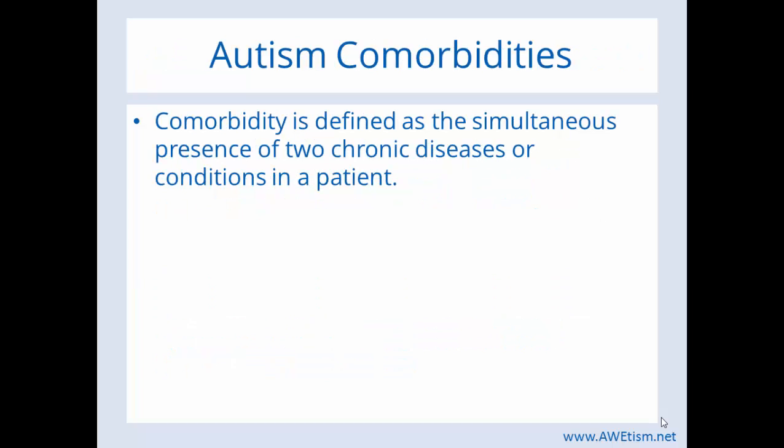Comorbidity — what is it? Comorbidity is defined as the simultaneous presence of two chronic diseases or conditions in a patient. It's really important to understand comorbidity with autism because autism has so many comorbid diseases. It's wrong to think that autism is just everything that's wrong with your child. It's not — it's technically comorbidities, and it's really important to understand the difference.